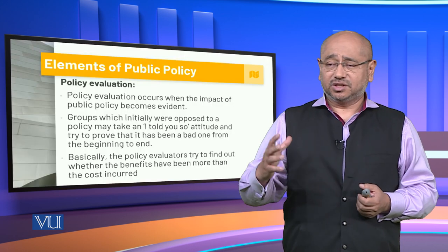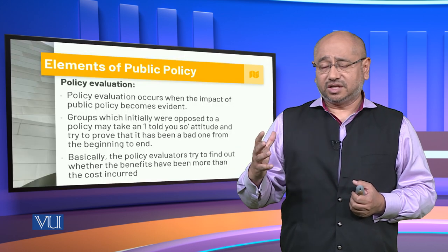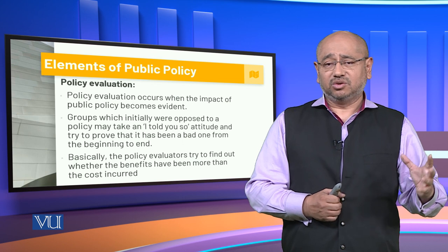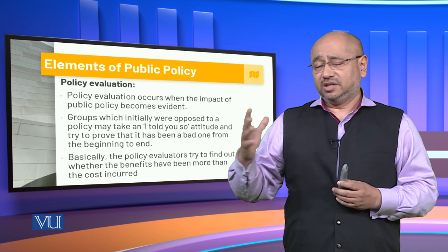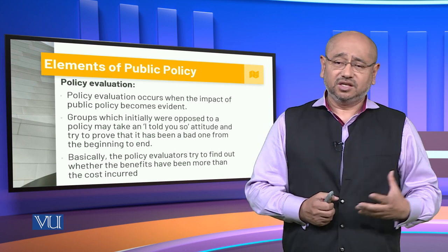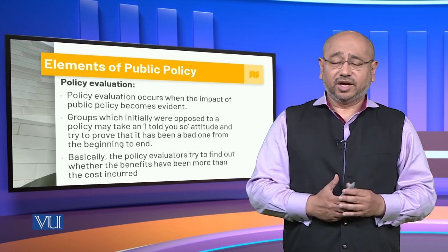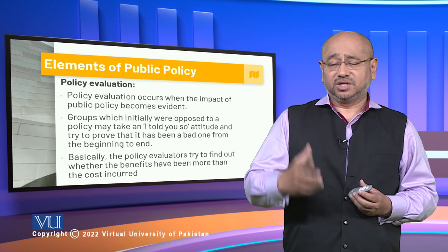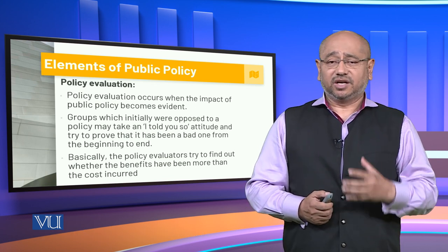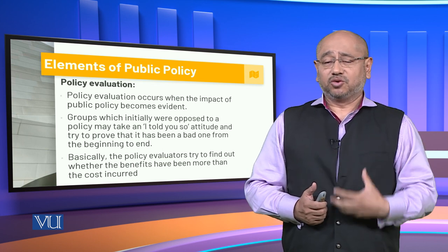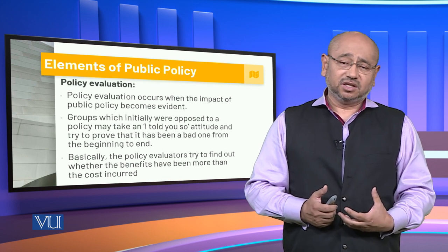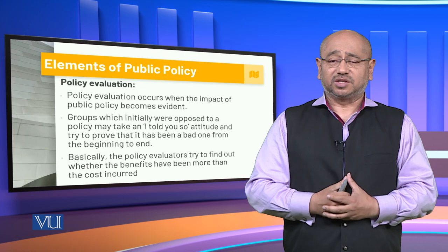So ladies and gentlemen, we've seen these elements: how the agenda setting is done, how it is planned and rolled out, what is the policy decision, what are the implementation issues, and then the policy evaluation to see its efficacy, optimization, and maximization, and also to see how it has affected business at large and the general public. These are what public policies are and how through public policies we can either promote particular issues and dimensions or have some unintended implications emerging from that particular public policy. Thank you so much.